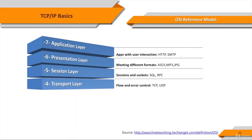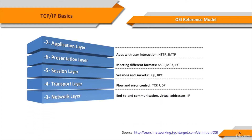Layer 4, the transport layer. This layer manages packetization of data, then the delivery of the packets, including checking for errors in the data once it arrives. On the Internet, TCP and UDP provide these services for most applications as well. Layer 3, the network layer. This layer handles the addressing and routing of the data, sending it in the right direction to the right destination on outgoing transmissions and receiving incoming transmissions at the packet level. IP is the network layer for the Internet.